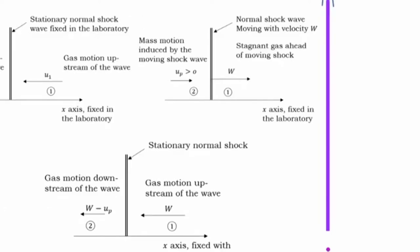Now, there are several cases where one can find moving shocks. Examples are in the shock tube, which is a device used for many applications, and the other case is during explosive events which generate a blast wave. A blast wave is a shock wave that moves in all directions.